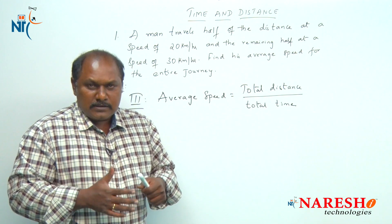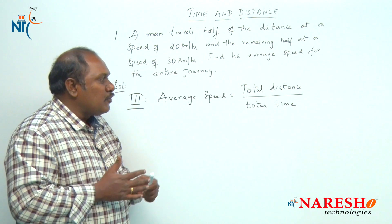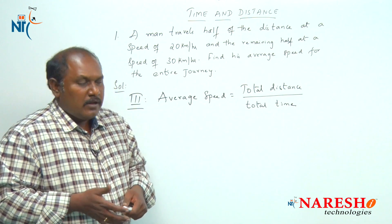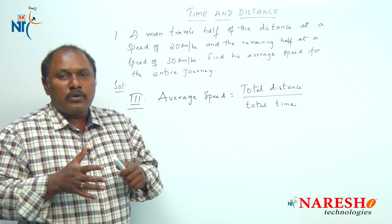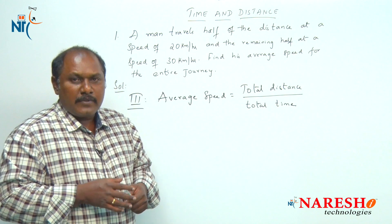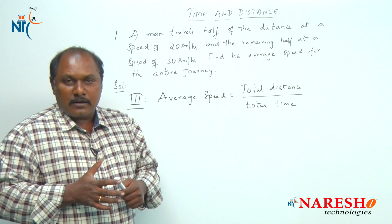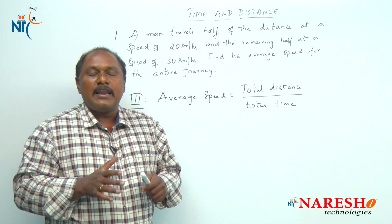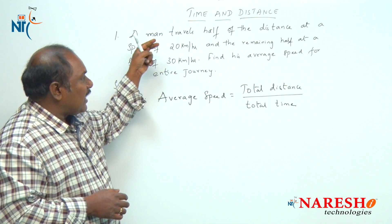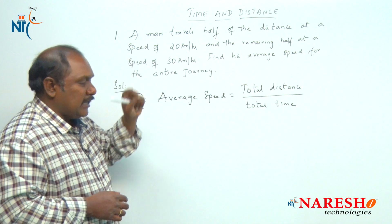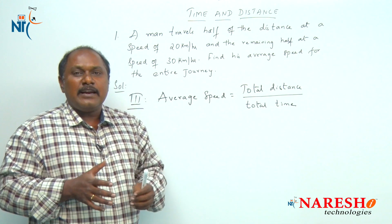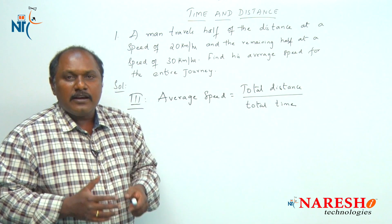In the previous method we assumed the total distance as d. Now instead of assuming d, let us assume a specific number — one that makes our calculations easy. We need a number that is exactly divisible by both 20 and 30. The least number exactly divisible by 20 and 30 is 60.